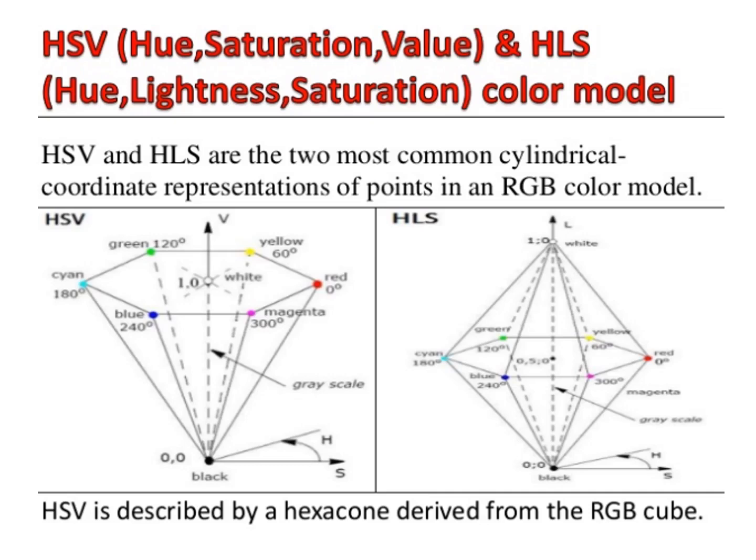Red is at 0 degrees, green at 120 degrees, as shown in the figure. Complementary colors in the HSV hexagon are 180 degrees apart. The saturation parameter S varies from 0 to 1; its value is the ratio ranging from 0 on the center V axis to 1 on the triangular sides of the hexagon. The value V varies from 0 at the apex of the hexagon to 1 at the top. The apex represents black; at the top, colors have their maximum intensity.